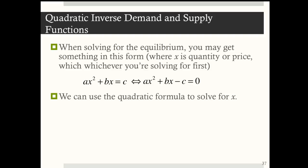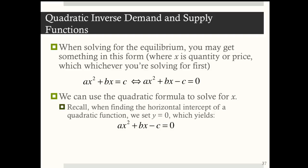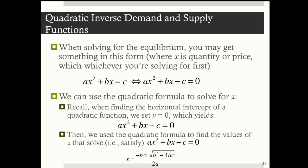That equation should look familiar. We can use the quadratic formula to solve for x. When finding the horizontal intercept of a quadratic function, we set y = 0, which yields ax² + bx - c = 0. Then we use the quadratic formula to find the values of x that solve ax² + bx - c = 0. It's no different here.